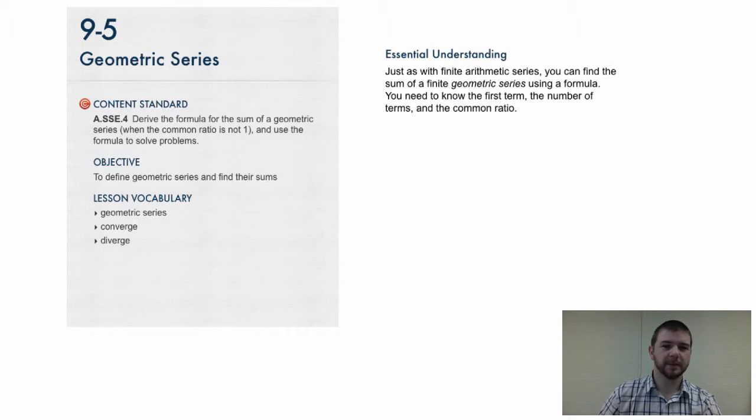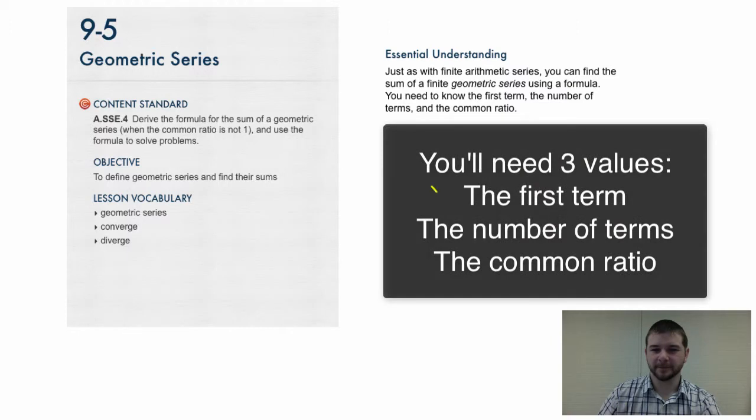Section 9-5, Geometric Series. The objective of this section is to define geometric series and find their sums. An essential understanding: just as with finite arithmetic series, you can find the sum of a finite geometric series using a formula. You need to know the first term, the number of terms, and the common ratio.